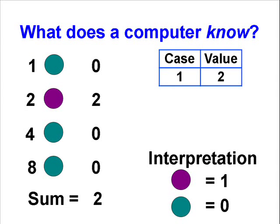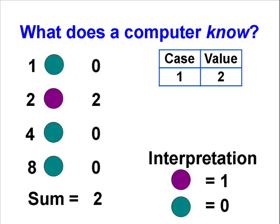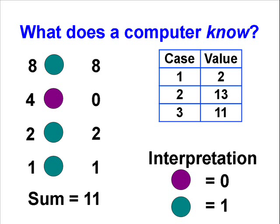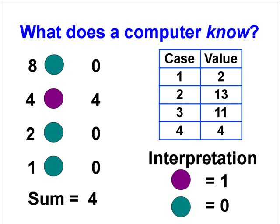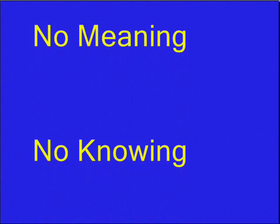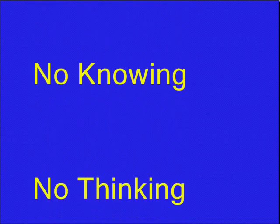Last time we saw that a computer state has no intrinsic meaning, but depends on how we humans choose to interpret it. A given state can mean 2, or 13, or 11, or even 4. Since the state has no intrinsic meaning, the computer can't know what it means, and if it can't know, then it certainly can't think.